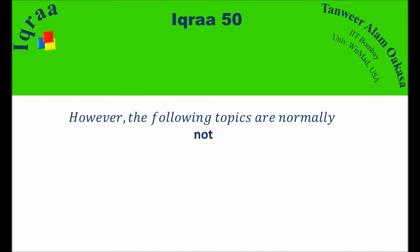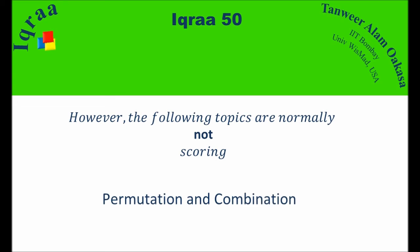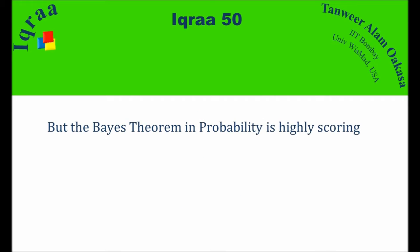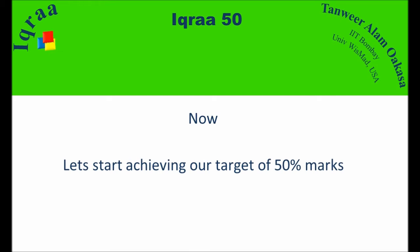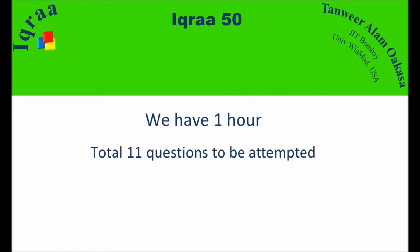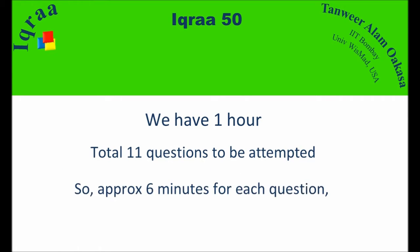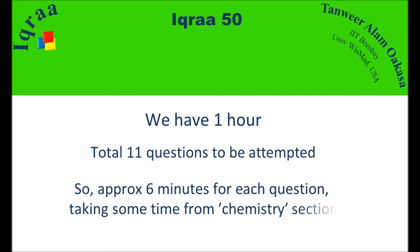However, some topics are normally not scoring — permutation and combination and probability — because these involve a number of cases and you might miss one and make a wrong answer. However, Bayes' theorem and probability is highly scoring because it involves direct application of the formula. We have 1 hour and 11 questions to attempt, approximately 6 minutes per question. Don't panic and be confident — you have enough time.